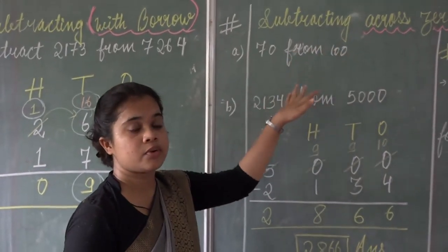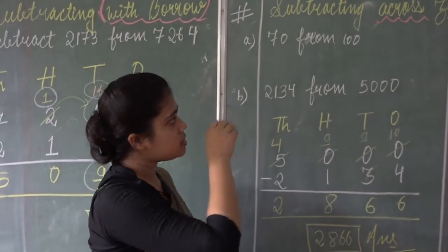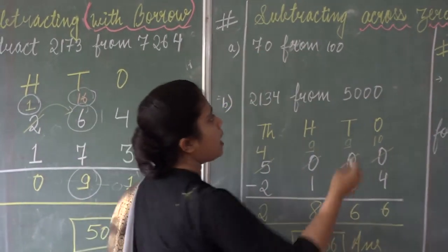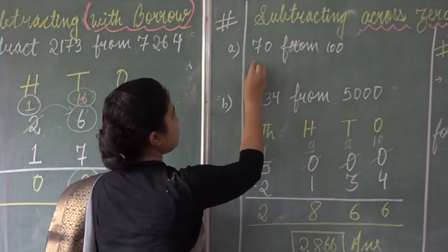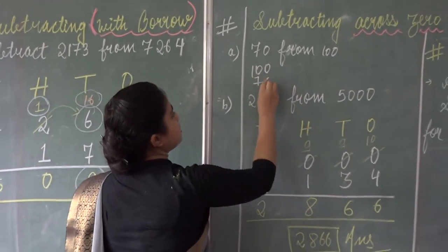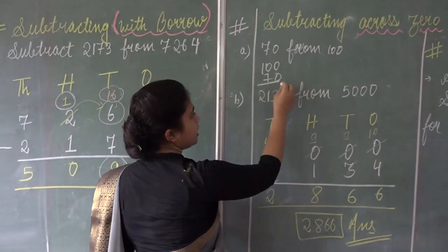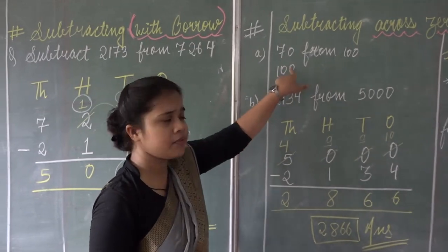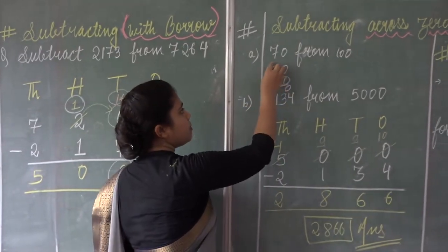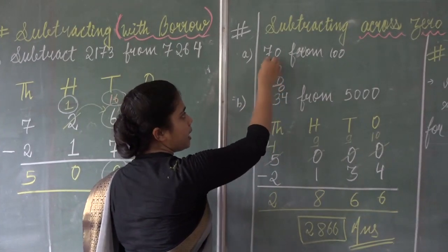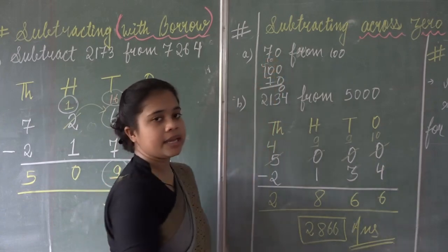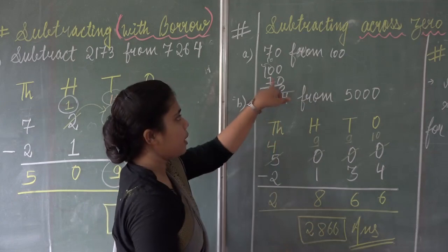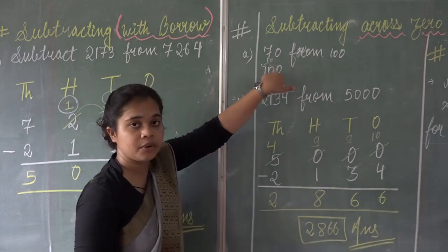Now let us move on to subtracting across zeros — when you have to subtract a number from 0. Like when you subtract 70 from 100, you cannot deduct 7 from 0. So 0 borrows from the next number, making it 10. Then 10 minus 7 is 3, so when you subtract 70 from 100, the answer is 30.